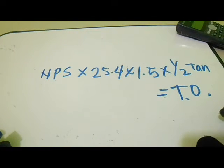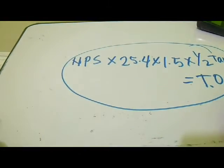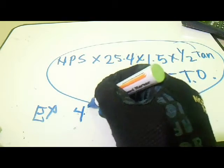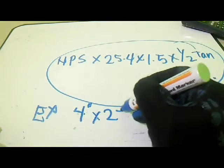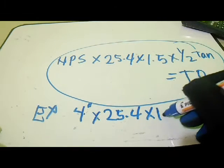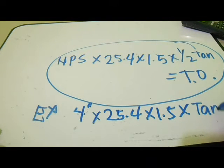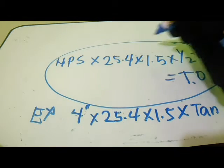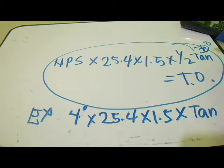Please take note of this formula. For example, we have a 4-inch NPS, multiply by 25.4, multiply by 1.5, multiply by tangent. Our degrees here is 30 degrees. From this 30 degrees, we have one-half tangent.